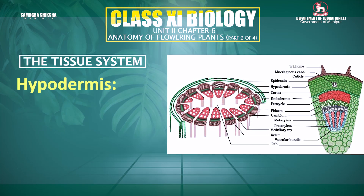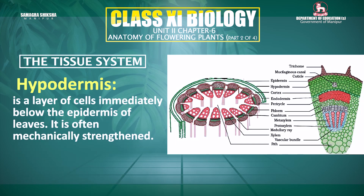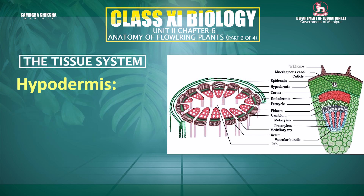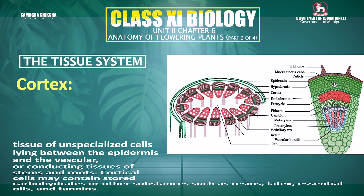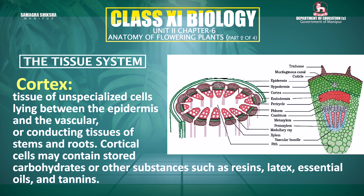There is also hypodermis, which is sub-epidermal in location, consisting of two to three layers of tissue. After the hypodermis comes the cortex. The cortex has intercellular spaces for gaseous exchange. The main function of the cortex is photosynthesis, and storage.